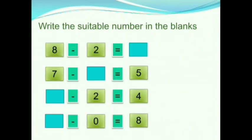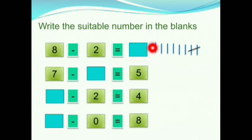Children, now we will write the missing numbers. In this question, we have 8 minus 2 equals to dash. What is 8 minus 2? First we have 8, so we will draw 8 lines. Next we have 2, so we will cut 2 lines. How many lines are remaining? 1, 2, 3, 4, 5, 6. 6 lines are remaining. So the missing number is 6.